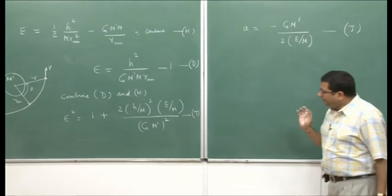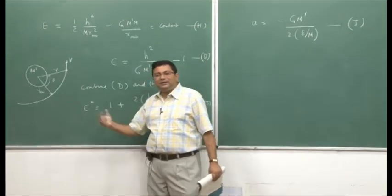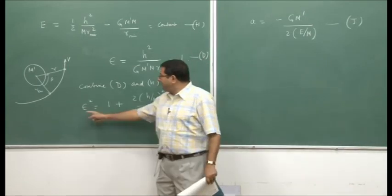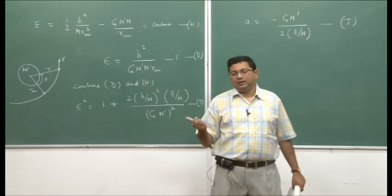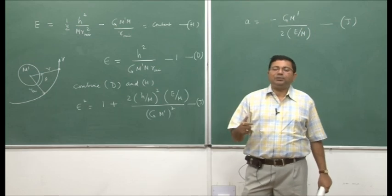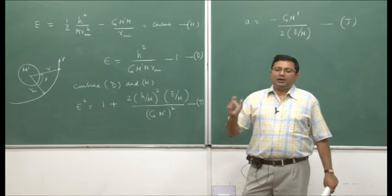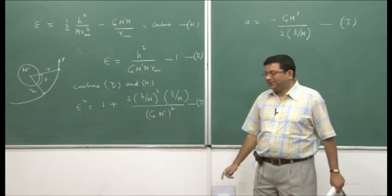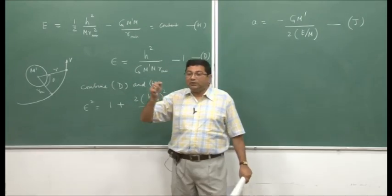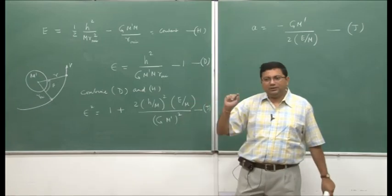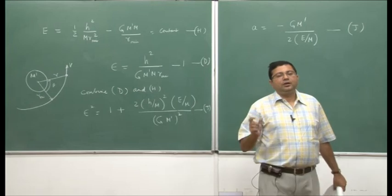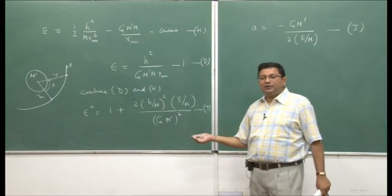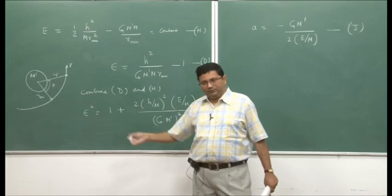Previously we discussed how eccentricity dictates the vehicle path. If epsilon is greater than 1, we have a hyperbolic path, which is not possible as the vehicle comes down. If epsilon equals 1, we have a parabolic path — a flyby. If epsilon equals 0, we have a circular path with radius equal to r-min. Another possible orbit is an ellipse where epsilon is between 0 and 1.